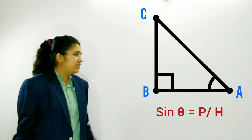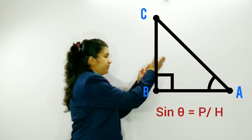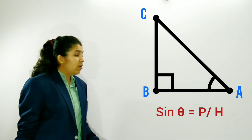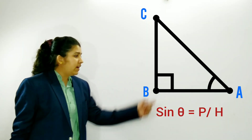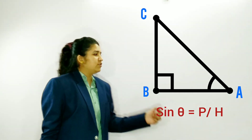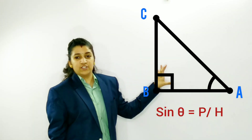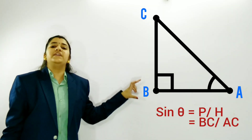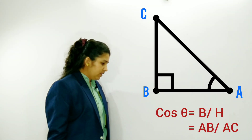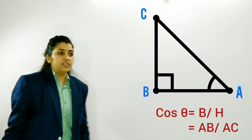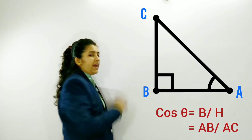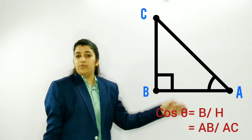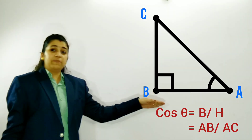Sin theta is actually the ratio of the perpendicular and the hypotenuse. We can write sin theta as perpendicular upon hypotenuse — that is BC upon AC. Now cos theta is actually the base upon hypotenuse. The base here is AB and the hypotenuse is AC, so AB upon AC.